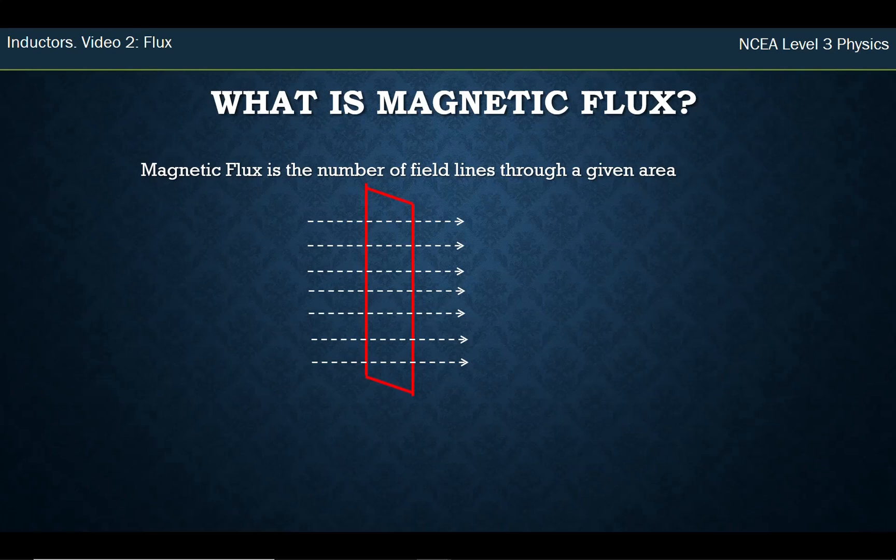And you can see there's about eight field lines going through it. Now that doesn't mean I have eight flux because the field lines I drew are arbitrary. But what it means is the more field lines that go through, the more flux. The less field lines that go through, the less flux. Okay, so flux is effectively counting those field lines that go through. It's really important that you realize that they go through at 90 degrees, 90 degrees to the surface, if you imagine a surface to that area.